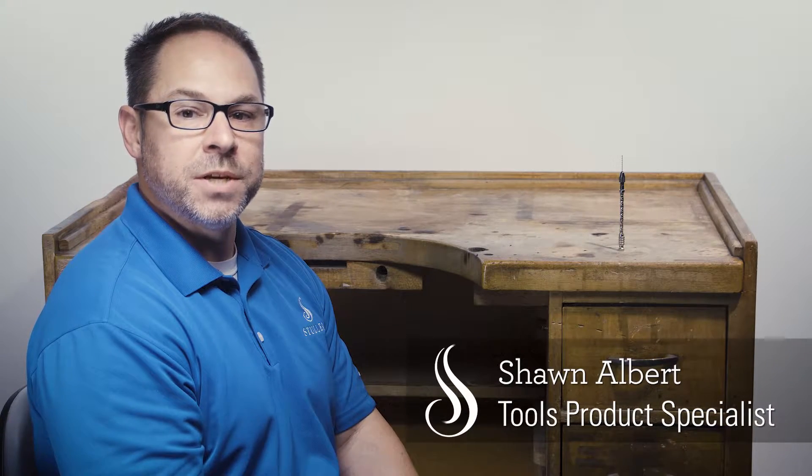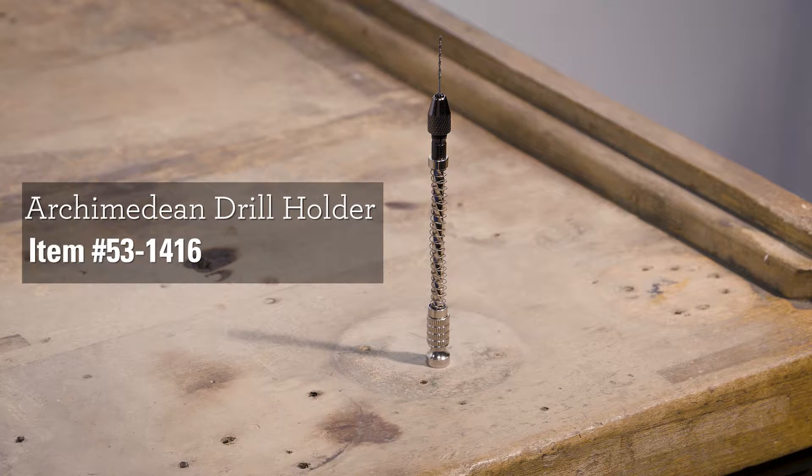This drill holder is a great way to achieve accurate drilling with small bits. The spiral hand drill turns by pushing the knurled center ring up and down to create a small drill. The drill holds bits up to 1mm in diameter in a collet at the head of the drill.